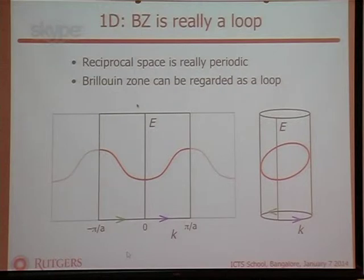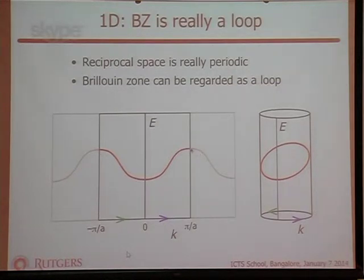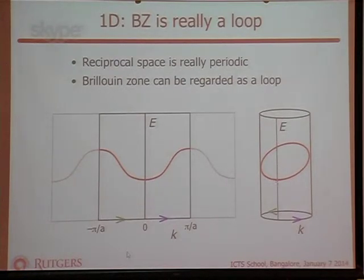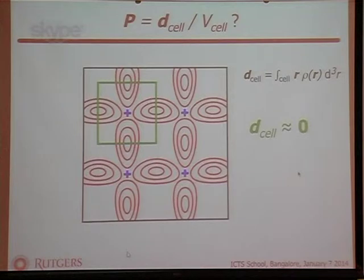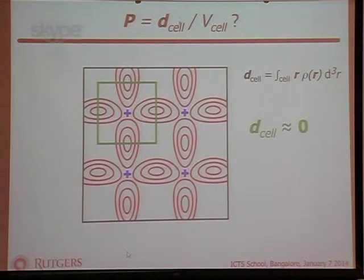In one dimension, the Brillouin zone extends from -π/a to π/a, but really lives on a unit circle because the states at the left and right boundaries are the same state — gluing the edges together. When you draw a band structure for a one-dimensional crystal you can think of it as plotted on a cylinder, and a band really is a closed loop. So I can define a Berry phase for this closed loop for a band of a one-dimensional insulator.